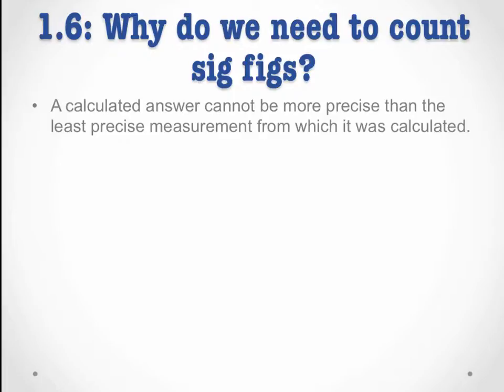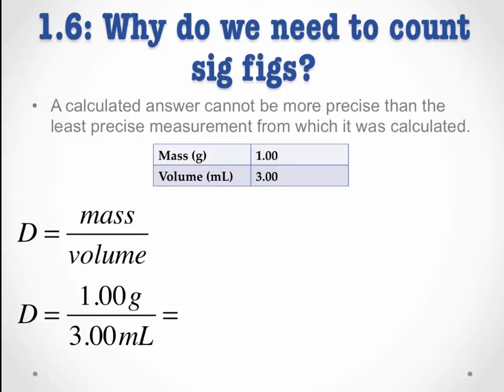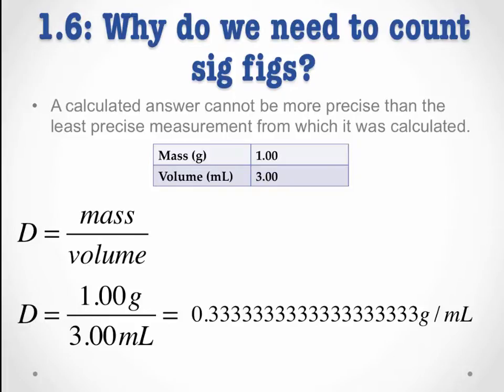Let's imagine you want to know the density of a substance. You collect some data: you measure the mass to a precision of 1.00 grams, and you measure the volume to a precision of 3.00 milliliters, so our precision is to two decimal places in each measurement. However, when we use the density formula — density equals mass over volume — to calculate the density of this substance, we're going to end up dividing 1.00 by 3.00. If you plug this into your calculator, you're going to get something absurd like this — probably even longer in your calculator. There's no way we measured our density to this degree of precision; that's a crazy amount of decimal places. We don't have devices precise enough to measure that. If you report your density to this many decimal places, you're essentially lying about the precision of your measurement.